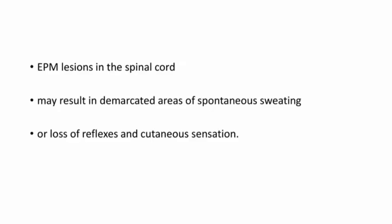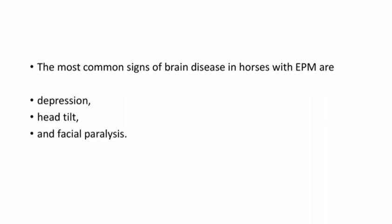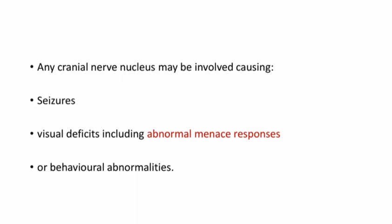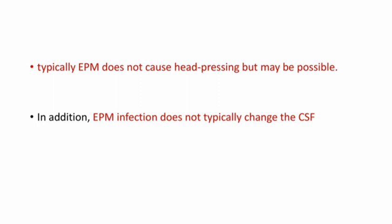EPM lesions in the spinal cord may result in demarcated areas of spontaneous sweating or loss of reflexes and cutaneous sensation. The most common signs of brain disease in horses with EPM are depression, head tilt, and facial paralysis. Any cranial nerve nucleus may be involved, causing seizures, visual deficits including abnormal menace responses, or behavioral abnormalities. Typically EPM does not cause head pressing, though it may be possible. EPM infection does not typically change the CSF.